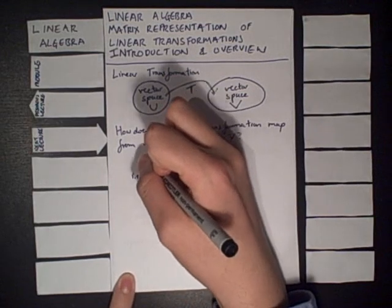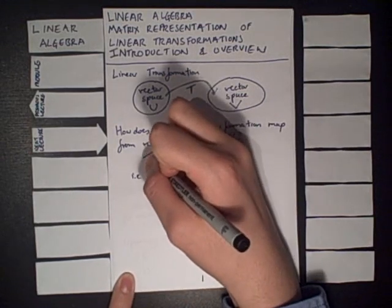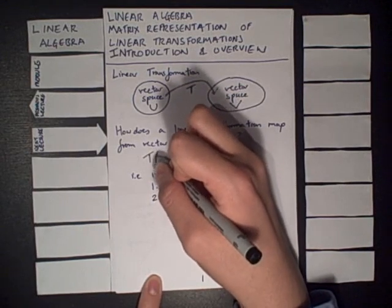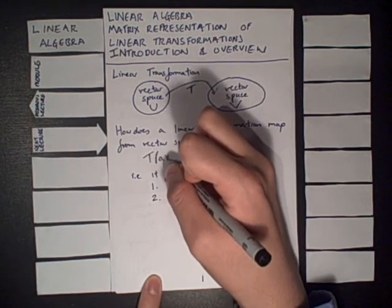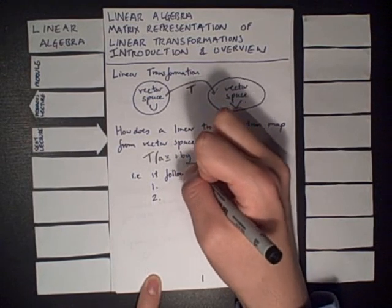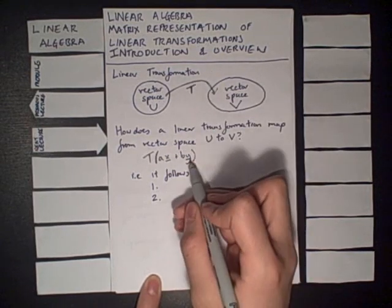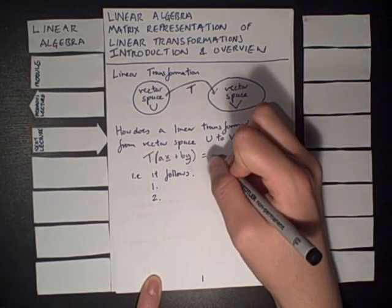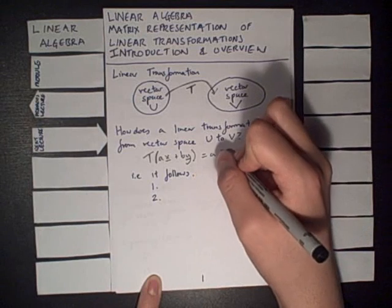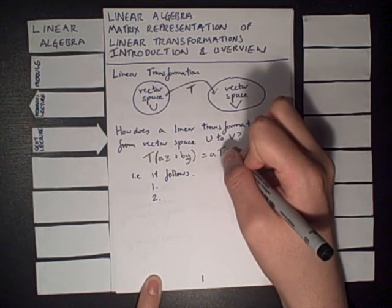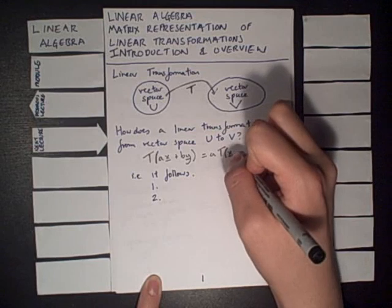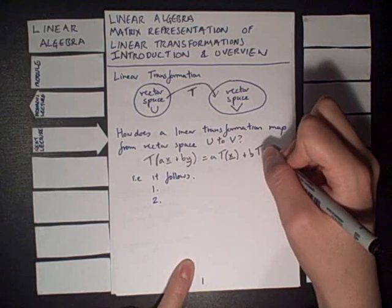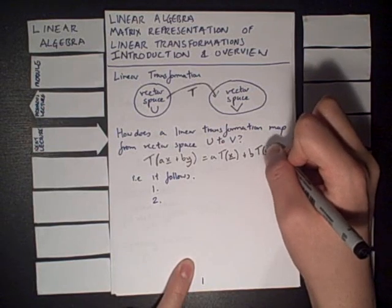In that T, the linear transformation applied to ax plus by, where x and y are vectors and a and b are scalars, is the same as the scalar a times the linear transformation T applied to the vector x plus b times the linear transformation T applied to the vector y.